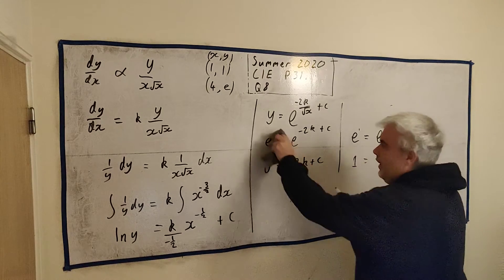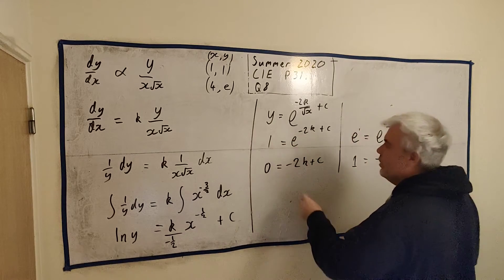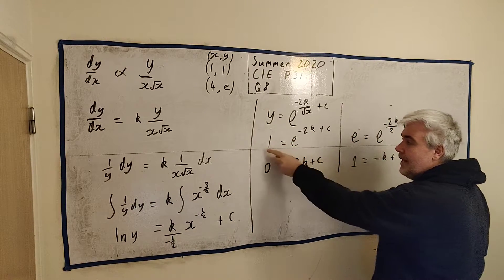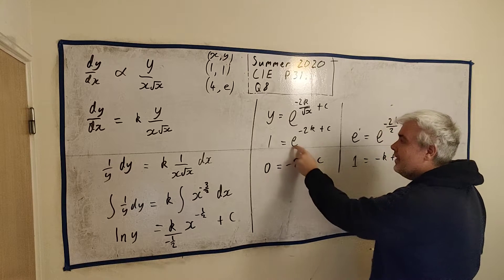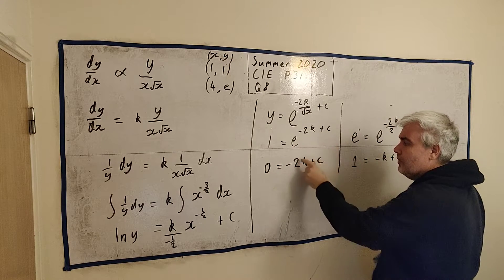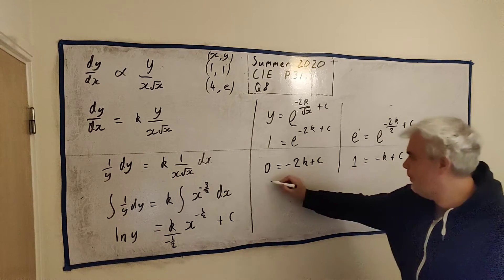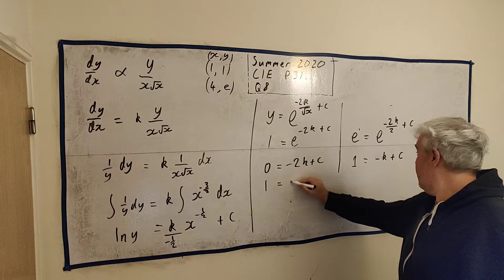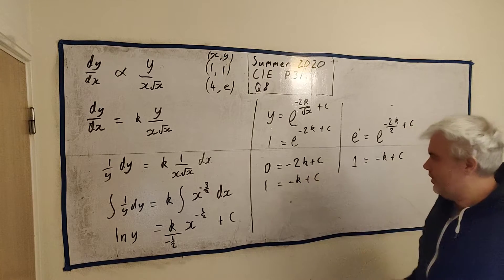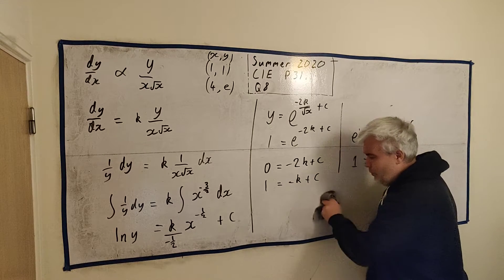Again, here, you could have taken the natural log of both sides. The natural log of 1 is 0. The natural log of e to the power of something is just the something. So, now look what we're going for. Simultaneous equation. Write them on top of each other. 1 equals minus k plus c. Just a simultaneous equation. A very simple one, in fact. So, let's do this quickly.